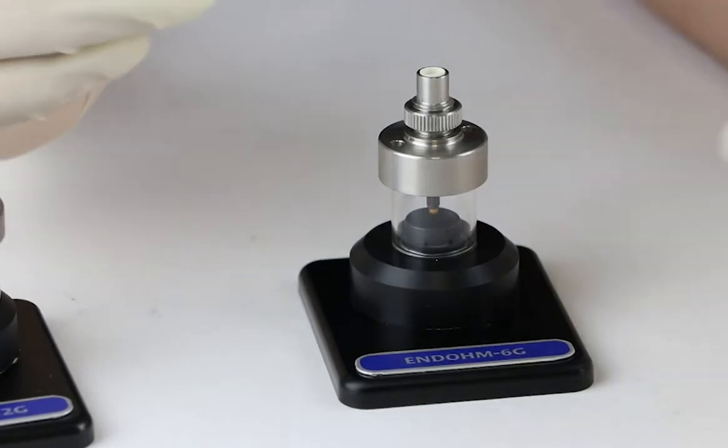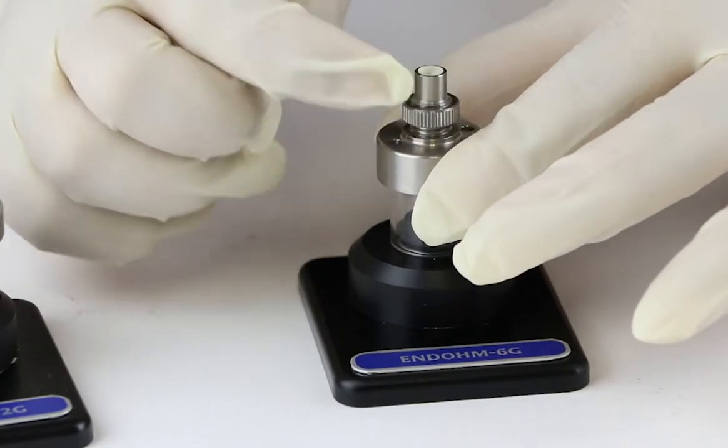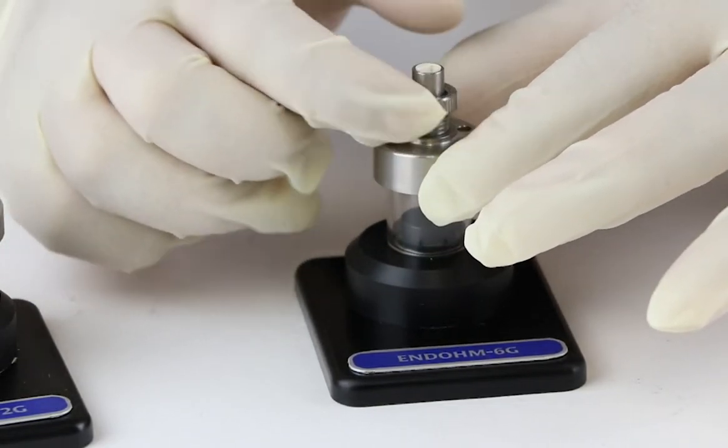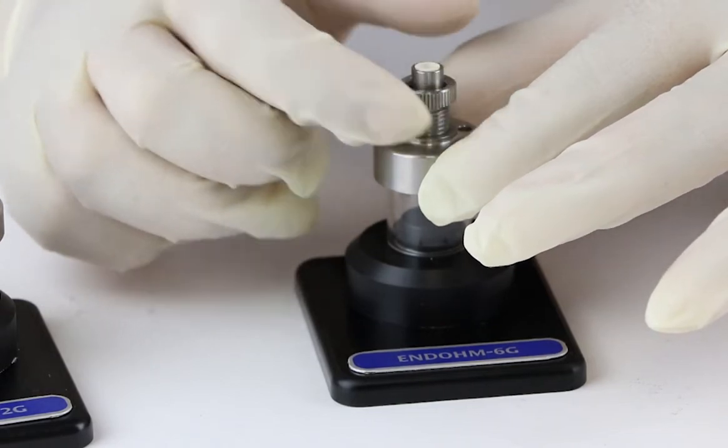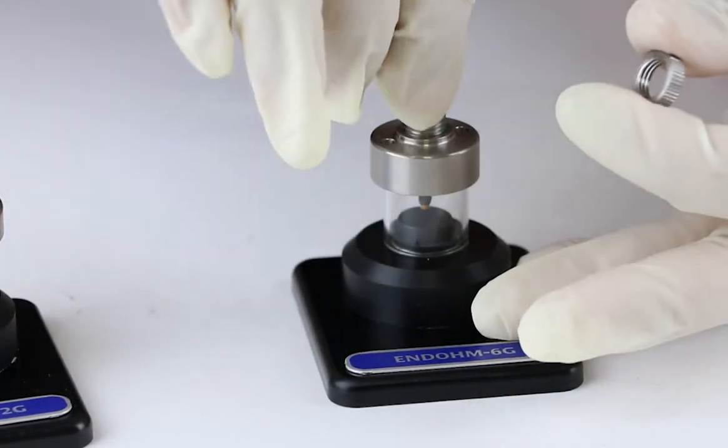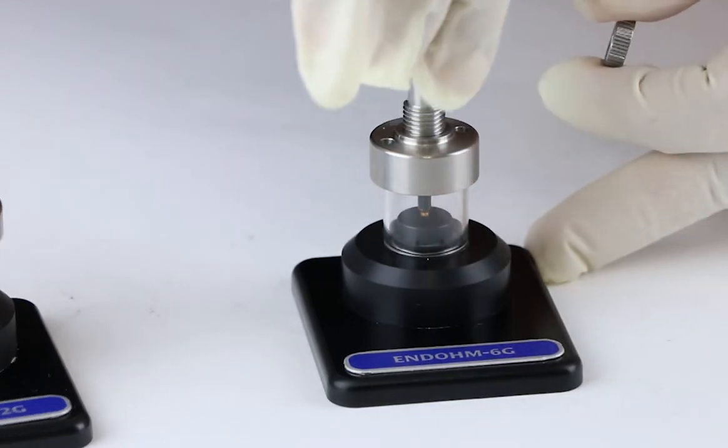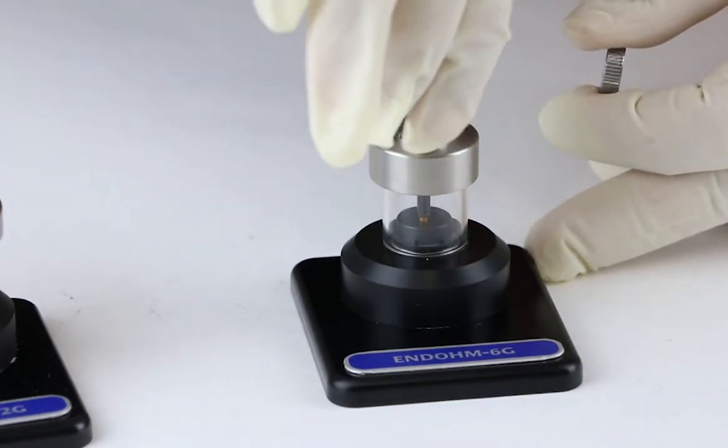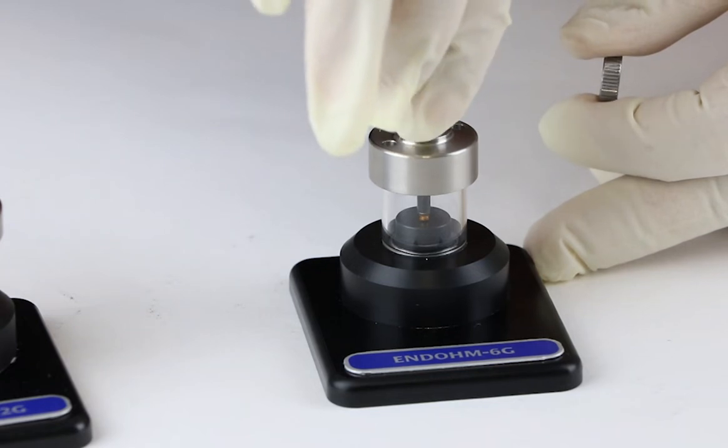First, untighten the big ring on the top of the cap to loosen the top electrode. Then, turn the top electrode clockwise to move towards the bottom electrode, or turn anti-clockwise to move away from the bottom electrode.